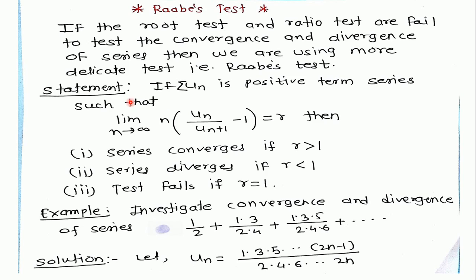See the statement of Raabe's test: if UN is a positive term series such that the limit as n tends to infinity of n times (UN / UN+1 minus 1) is equal to R, then the series is convergent if R is greater than 1, and the series diverges if R is less than 1, and the test fails if R is equal to 1.